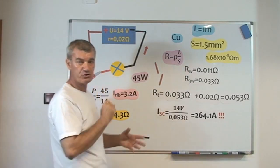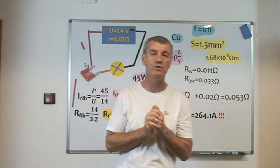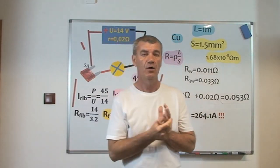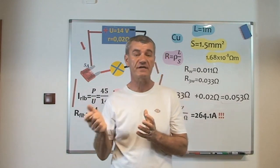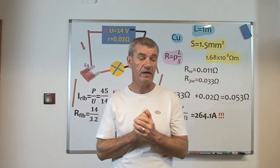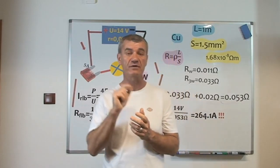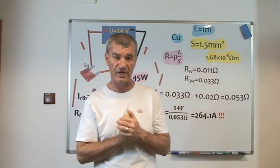The same is true in the household system, because there we use fuses or MCBs. MCB is a miniature circuit breaker, and we can use RCBO, residual circuit breaker with overcurrent protection.